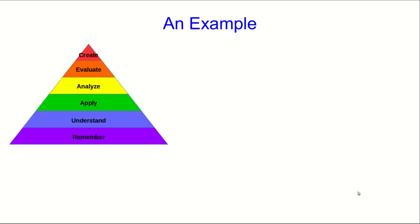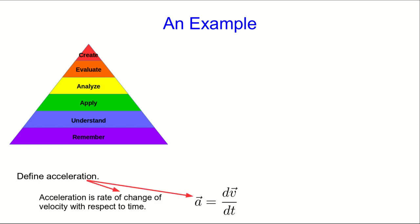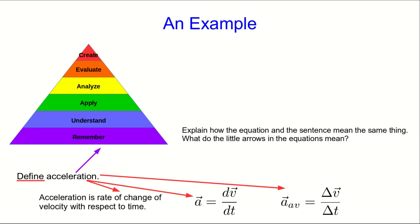For now, here's an example. I'm going to classify tasks which could exemplify objectives. I could ask a student to define something like acceleration, and I would accept a sentence or an equation — perhaps a definition of the average acceleration. Just stating a definition is at the remember level. On the other hand, I might ask them to explain how the equation and the sentence mean the same thing, or what all these little arrows mean. Either way, it's an explanation, and that's probably at the understand level.